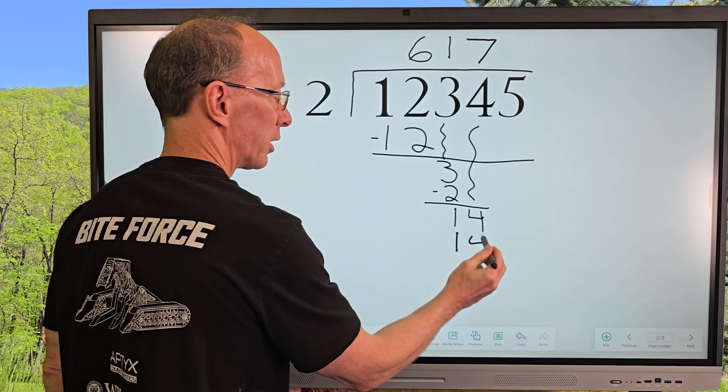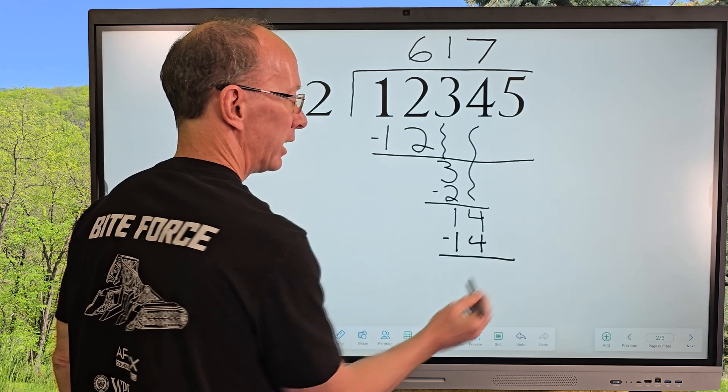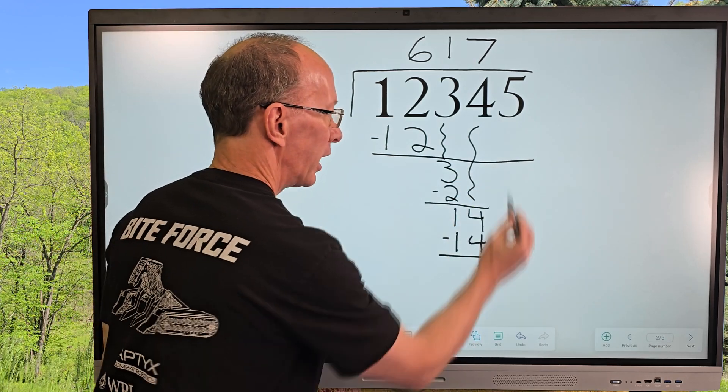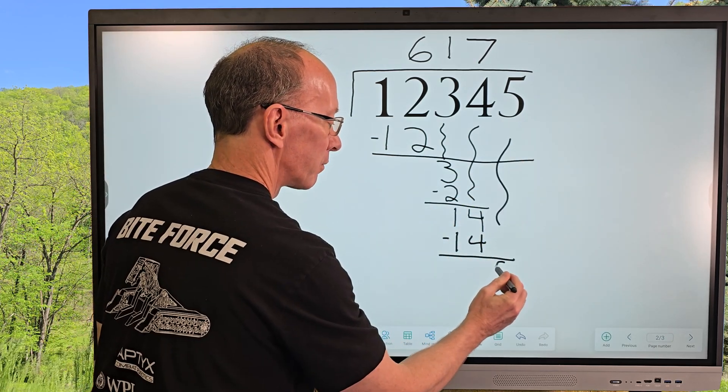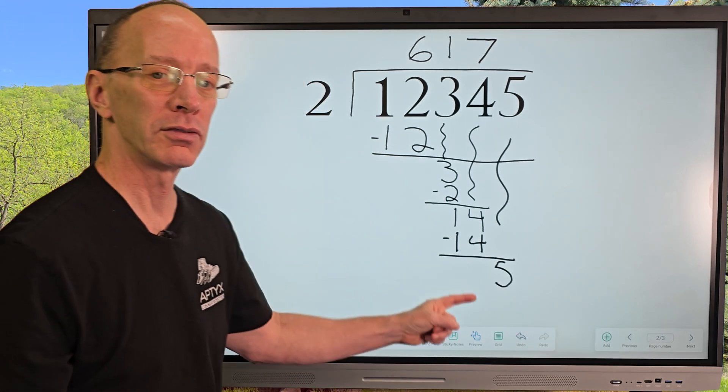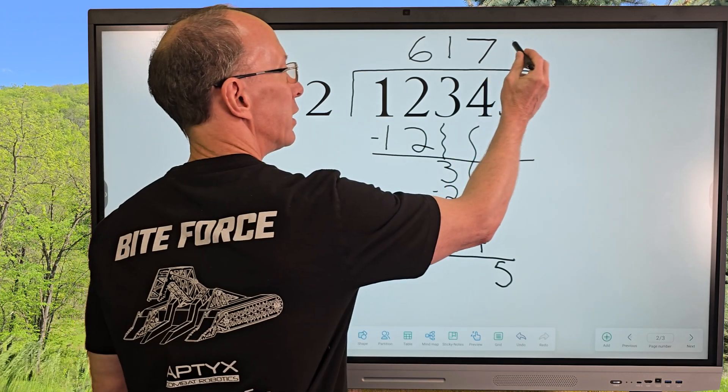And then I'm going to go ahead and subtract, and that would be a 0. And I bring the next number down which would be a 5 right here. And now how many times does 2 go into 5? 2 times. So I'm going to put 2 right here.